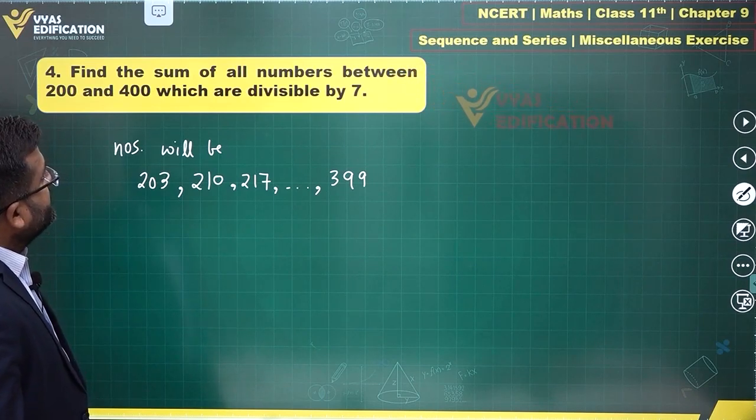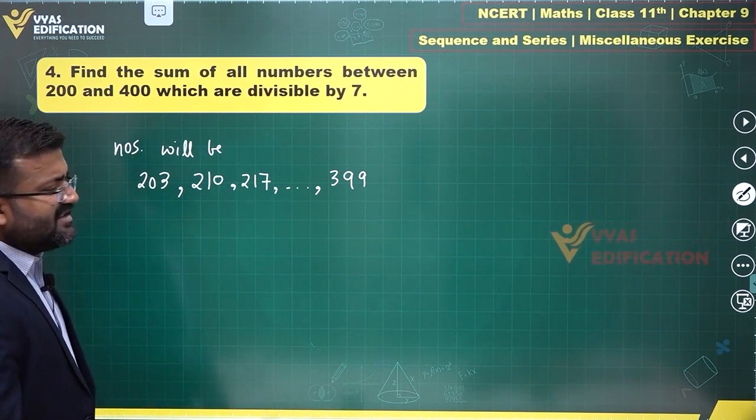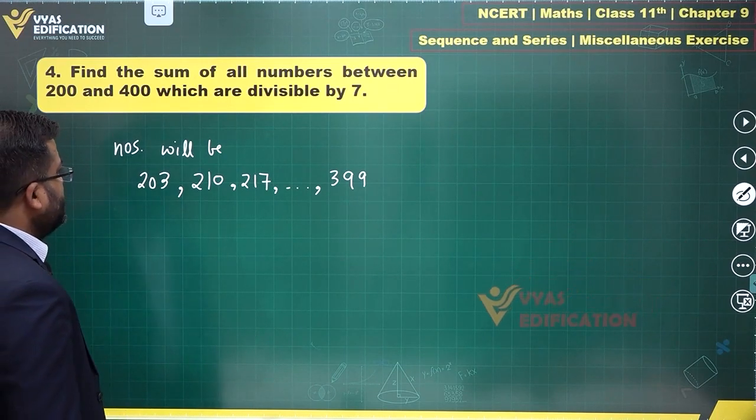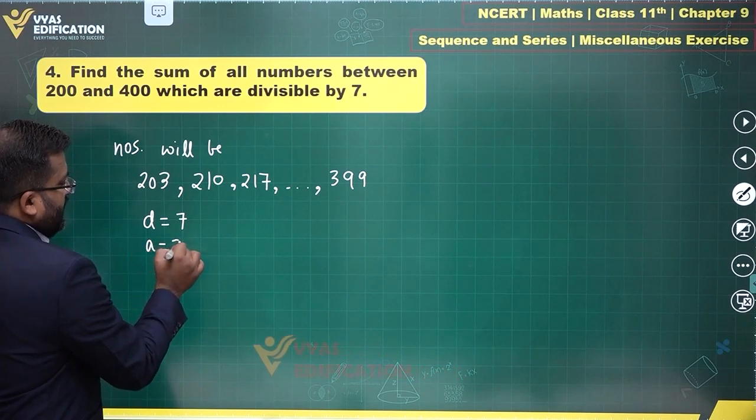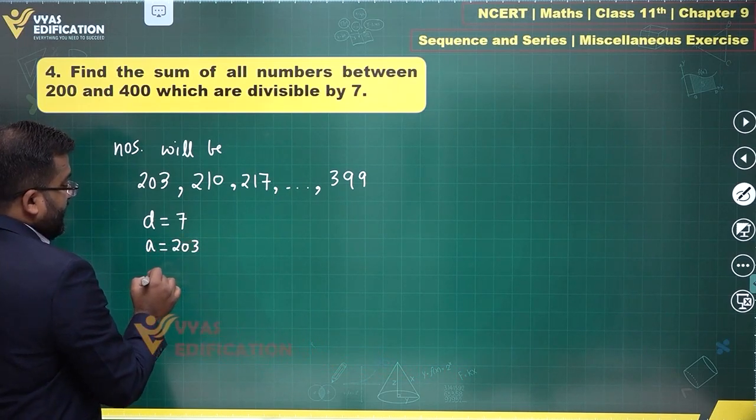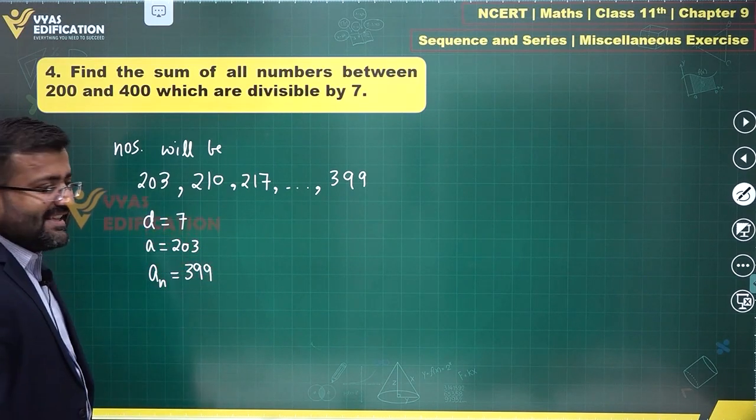This is the sequence that we get, and this is an arithmetic progression. Common difference is 7, first term is 203, and the last term a_n is 399. We are asked to find S_n.